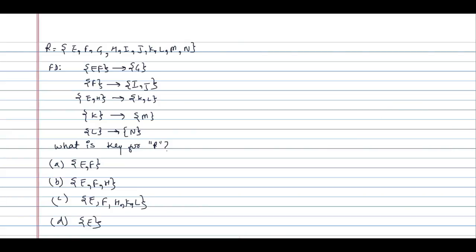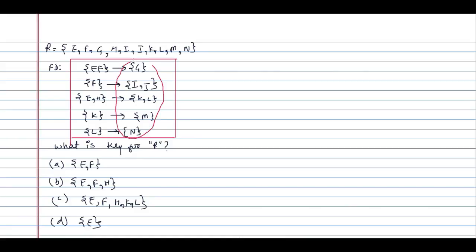There is a shortcut for identifying the key for the relation. Look at the functional dependencies which are given, and look at the right-hand side of every functional dependency. Check what attributes are not present on the right-hand side.